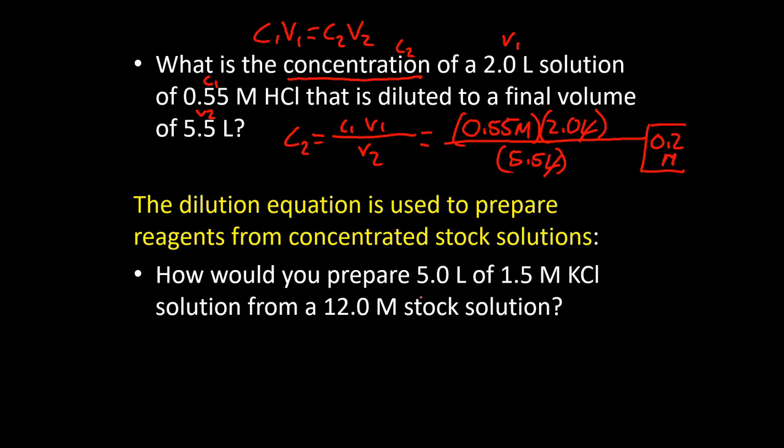Why don't you give this next one here a shot on your own, so you can pause the video here in just a second to try and work this out. So this particular question says, how would you prepare five liters of a 1.5 M KCl solution given a 12 M stock solution? So try to work out what your one and two values are and see if you can solve for the unknown.